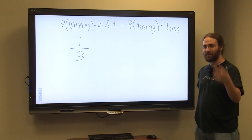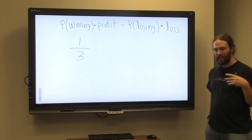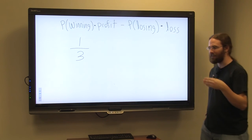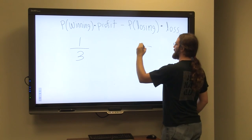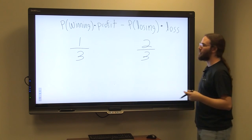If you don't win, you lose. So using the complement rule, if you have a one in three chance of winning, you have a two in three chance of not winning, of losing.